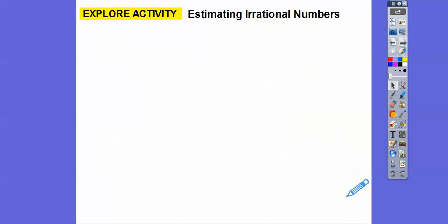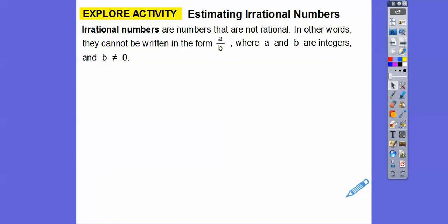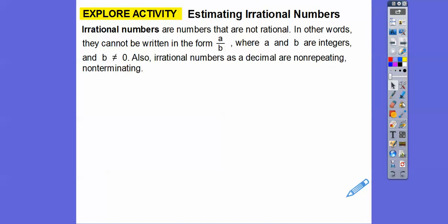Irrational numbers are numbers that are not rational — they can't be written in the form A/B where A and B are integers and B is not zero. If given as a decimal, irrational numbers are non-repeating and non-terminating; they go on forever and don't repeat. Probably the most common irrational number you're aware of is pi: 3.141592... It goes on forever and ever.